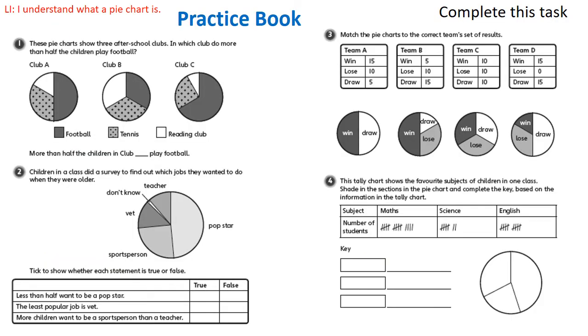Now in your practice book, question one. These pie charts show three after school clubs. In which club do more than half of the children play football? So the first thing you've got to do is think about the key. Which one is it - the white bit that's football, the grey bit, or the spotty bit? So that's your first thing. And then you've got to decide which circle, which pie chart shows that more than half are playing football. Is it A, is it B, or is it C? And that's what you're going to write in that sentence.